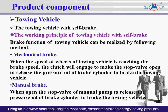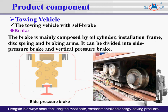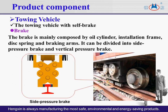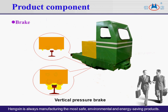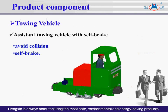The self-brake vehicle can self-brake to greatly improve safety performance. It helps realize towing vehicle locking safety brake, with both manual and automatic brake protection available. The brake can be classified as side pressure brake and vertical pressure brake according to structure type. The towing vehicle with self-brake can also guarantee the relative locations of connected movers to effectively avoid collision from upslope and downslope.